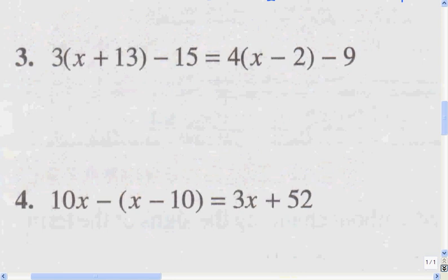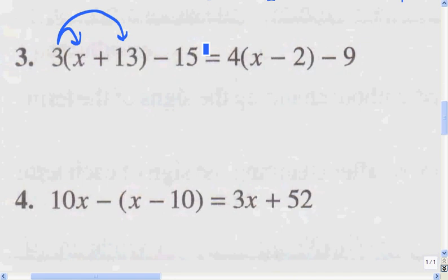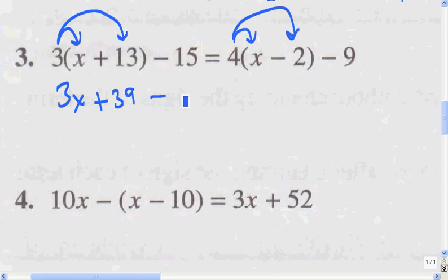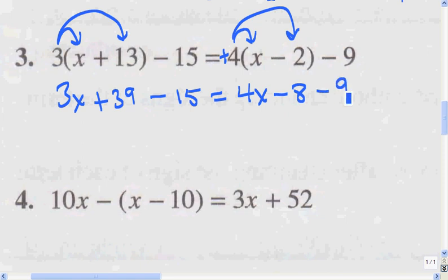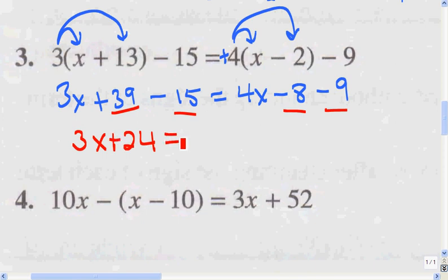First step is to get rid of the parentheses using the distributive axiom. 3 times x is 3x, plus 39 because 3 times 13 is 39. Minus 15 equals 4 times x, which is 4x. 4 times negative 2 is negative 8, because when multiplying with different signs, the answer is negative. Now combining like terms: I can combine the 39 and the negative 15, and the negative 8 and the negative 9. So I get 3x + 24 = 4x − 17.